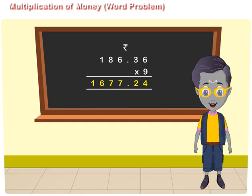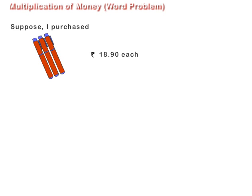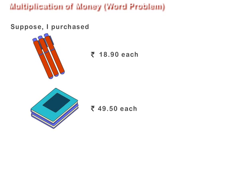Let us take a word problem to explain the multiplication of money. Suppose I purchased 3 pens for Rs. 18.90 each, 2 books for Rs. 49.50 each, and a color box for Rs. 12.50. I give 200 rupee notes to the bookseller.